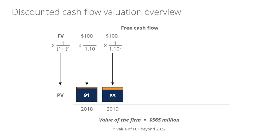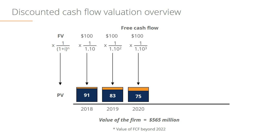The second cash flow, which occurs in 2019, is also a hundred dollars but this time is raised to the power of 2. As you can see at the bottom, the present value of that $100 is being reduced over time. In 2020 it's raised to the power of 3 and becomes only $75 of present value today from a hundred dollars of free cash flow in the future.